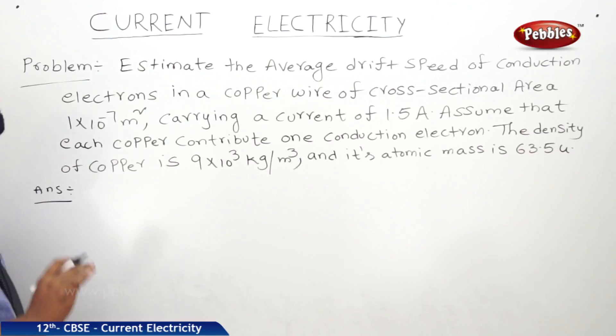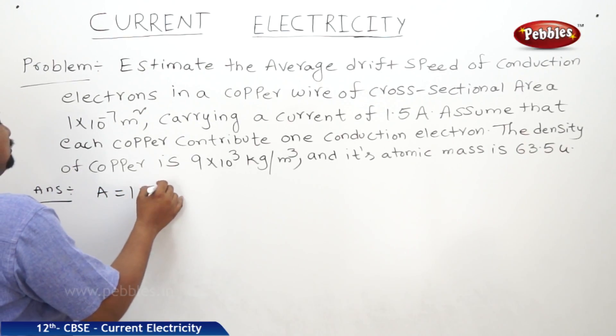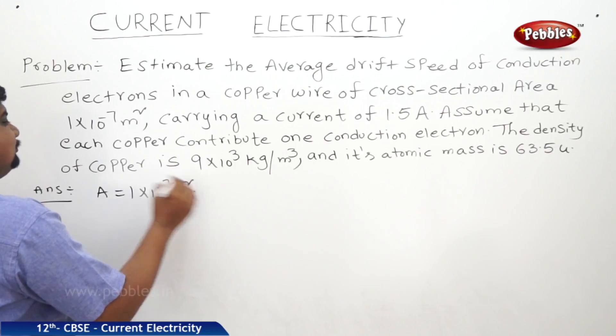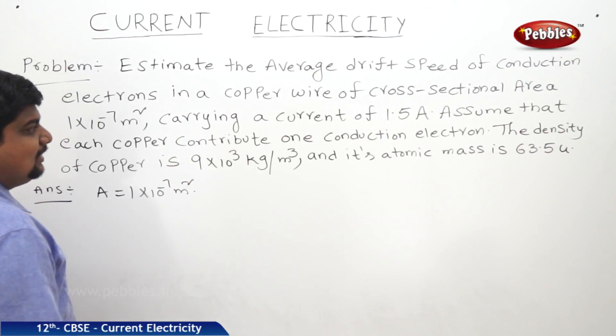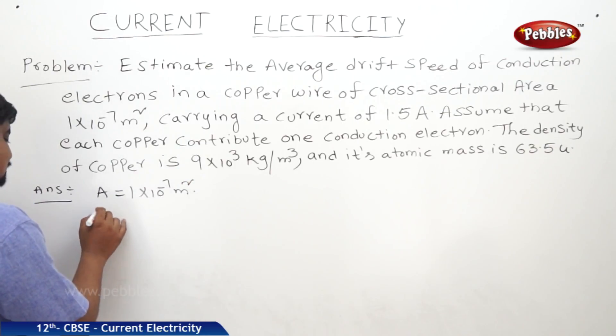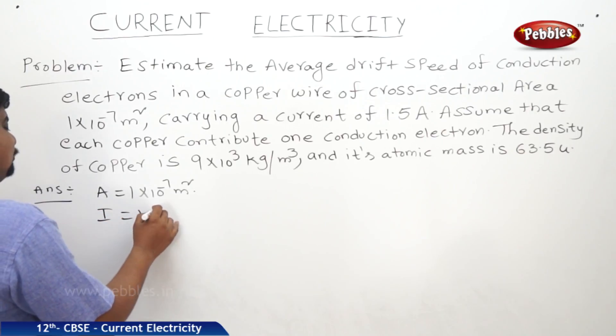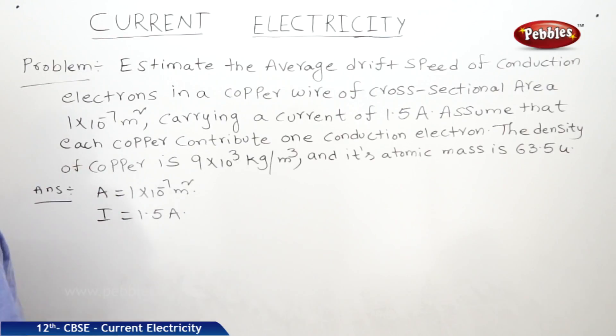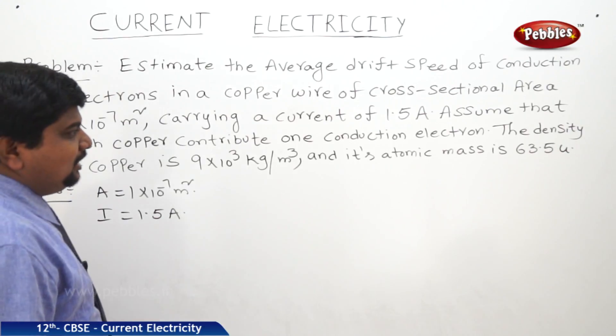first of all we should write the contents. Area is 1 into 10 to the power of minus 7 meter square, which carries a current of 1.5 amperes, I is equal to 1.5 amperes. Assume that each copper contributes one conduction electron. The density of copper is 9 into 10 to the power of 3 kg per meter cube and its atomic mass is 63.5 units.